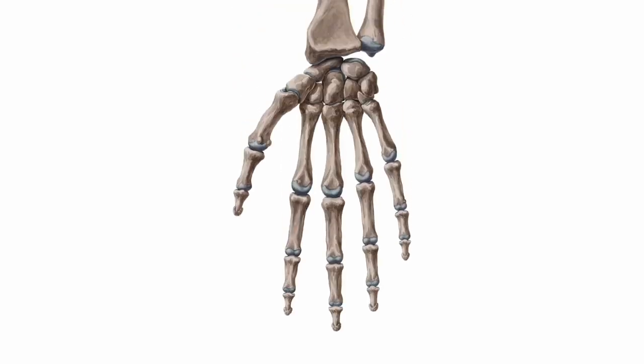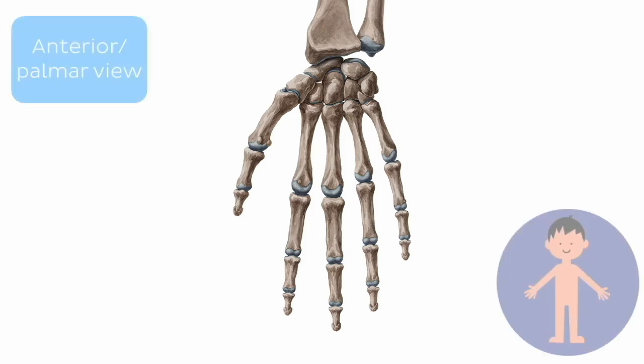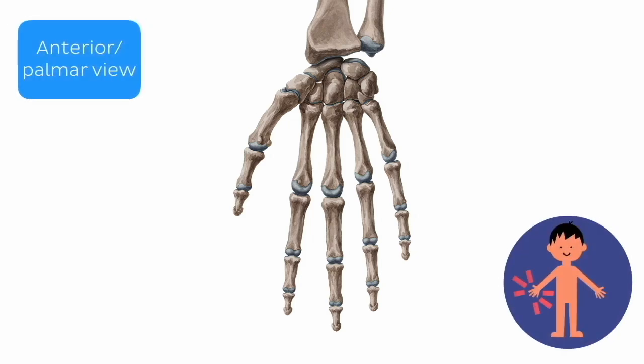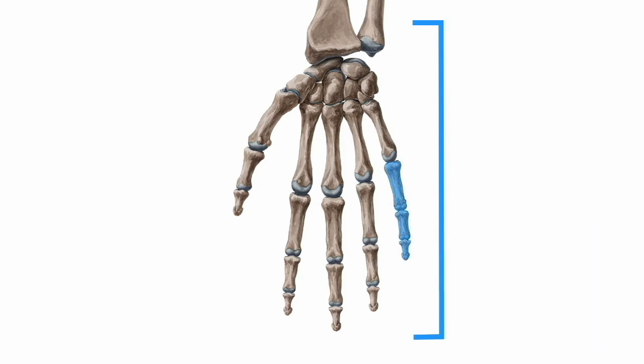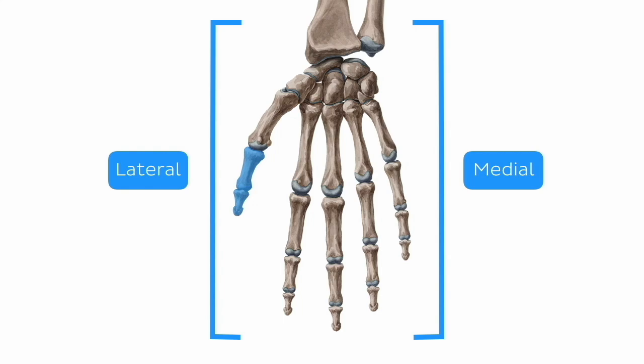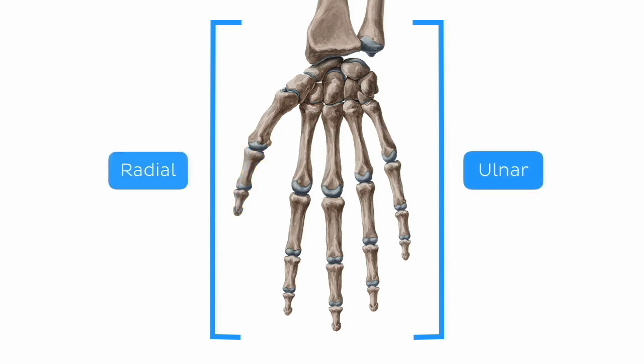We'll begin our journey with the bones of the wrist, called the carpal bones. To avoid any confusion, let's first get oriented. Here we have an anterior or palmar view of the wrist and hand. That means that this side — the pinky side — is medial, and the thumb side is lateral. You'll also see these respectively described as the ulnar and radial aspects of the hand. Keep this in mind as we move forward. The last thing you want on this journey is to get disoriented.